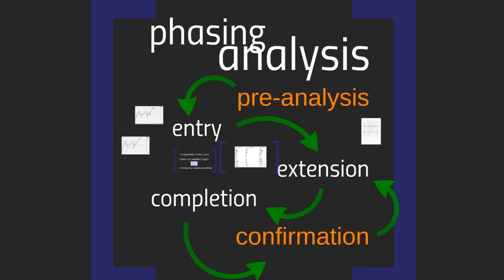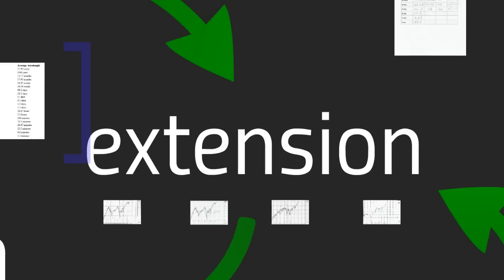In our previous webinar, I spoke about the phasing analysis entry stage, and we performed a phasing analysis entry on our monthly chart of the S&P 500, identifying potential 54-month cycle troughs. Today's webinar is all about the next stage — the phasing analysis extension stage — which involves working from the longest identified cycle down through shorter cycles to fill in the full analysis, understanding what all cycles are doing in the market.